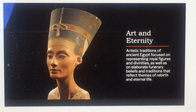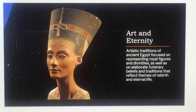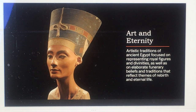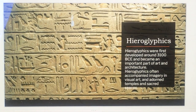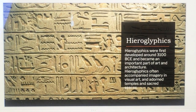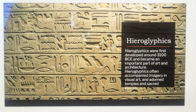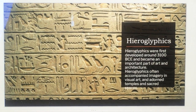Artistic traditions of ancient Egypt focused on representing royal figures and divinities, as well as elaborate funerary beliefs and traditions reflecting themes of rebirth and eternal life. Hieroglyphics were first developed around 3100 BCE and became an important part of art and architecture. Hieroglyphics often accompanied imagery in visual art and adorned temples and sacred spaces.